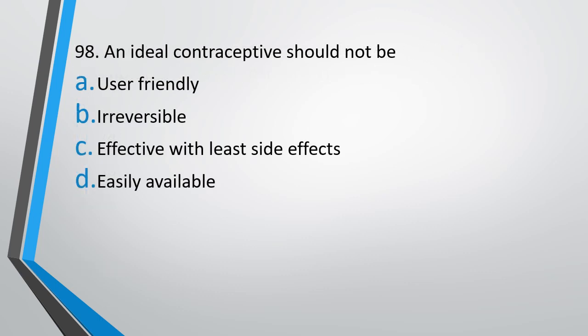Question number 98. An ideal contraceptive should not be: user-friendly, irreversible, effective with least side effects, easily available. An ideal contraceptive should not be, sorry, should not be. The correct answer is option B, it should not be irreversible.